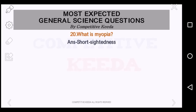The last question: what is myopia? It is short-sightedness or near-sightedness. In this case, close objects appear clearly but far objects are not so clear. So this is short-sightedness.